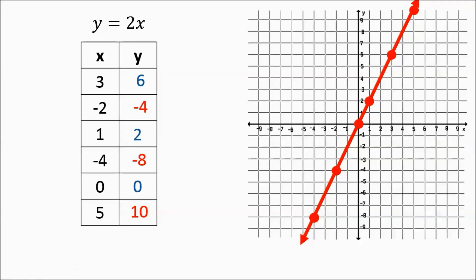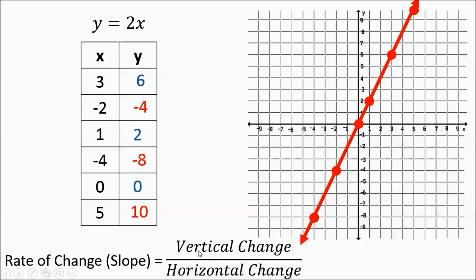We're going to talk about one more thing before we move on to another example. We need to understand how this line is showing a rate of change, otherwise known as a slope. A slope or rate of change is defined as your vertical change over your horizontal change — vertical meaning up and down, horizontal meaning side to side. If you look at these points and look at a point then look at its next point to the right, if I look at this first point going to the next, from this point to this point I went up 4, right 2. And from this point to this point, I went up 4, right 2.